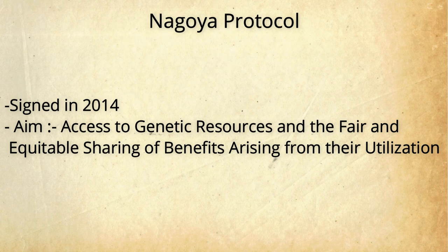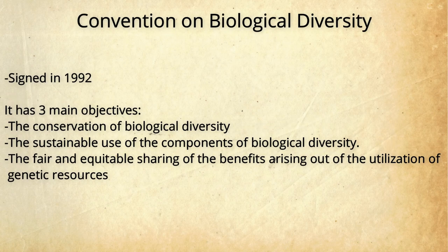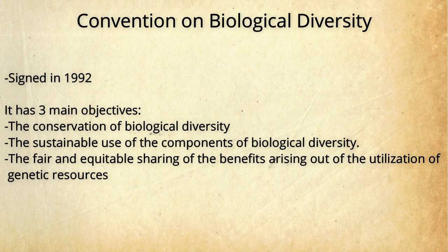The Nagoya Protocol deals with the fair and equitable sharing of benefits arising from the utilization of genetic resources. The final convention is the Convention on Biological Diversity, held in 1992 at the UN Conference on Environment and Development. It has three main objectives: first, to conserve biological diversity; second, the sustainable use of the components of biological diversity; and third, the fair and equitable sharing of benefits arising from the utilization of genetic resources.